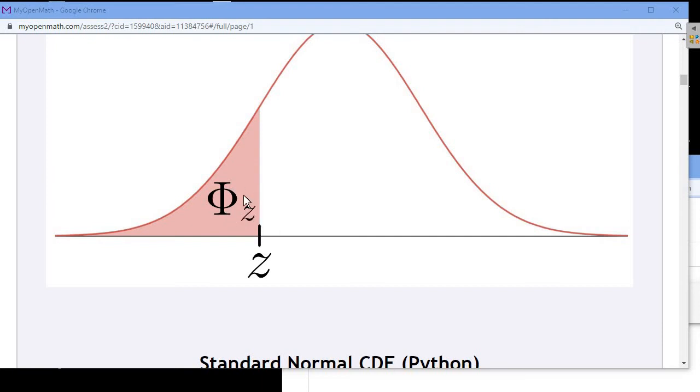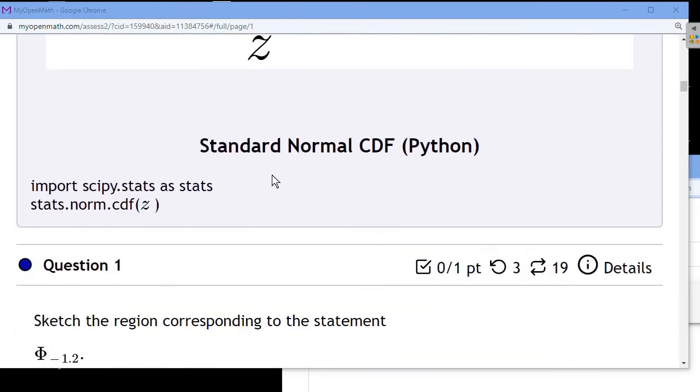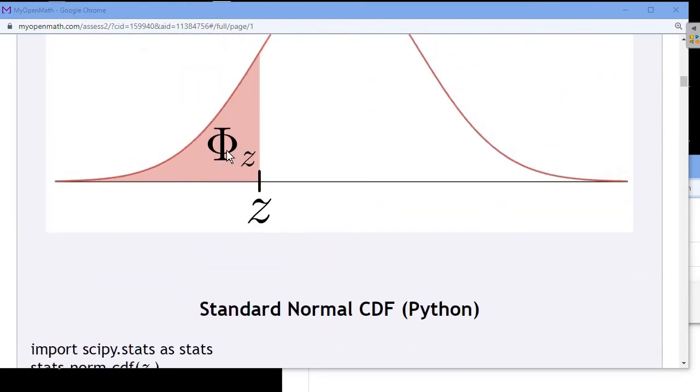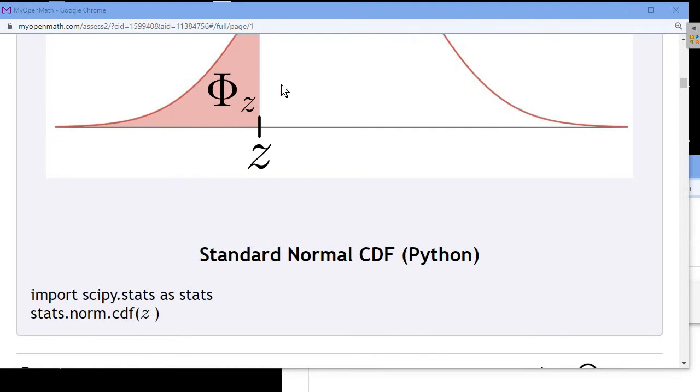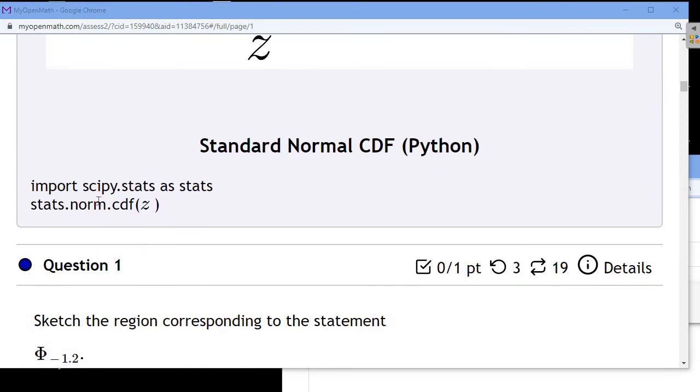Now we're going to calculate capital phi of z and normally, you'd use either a table or a calculator, some calculus maybe. We're going to use the computer. We're going to use Python. So to calculate that pink area to the left of that z-score underneath the density function of the standard normal distribution, we use the scipy Python library. So we're going to import scipy.stats as stats. We're going to be using that scipy.stats library a lot.